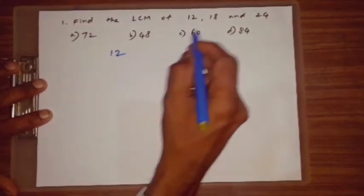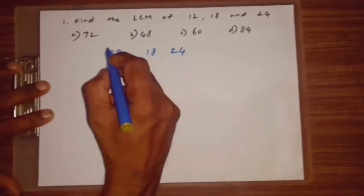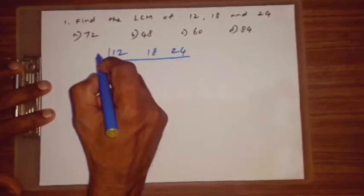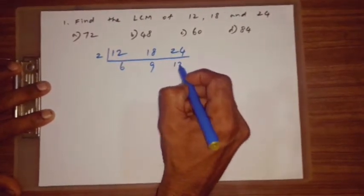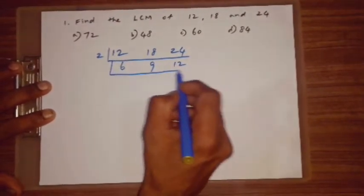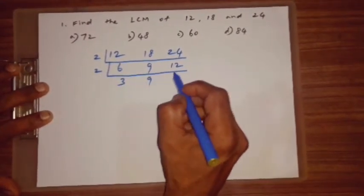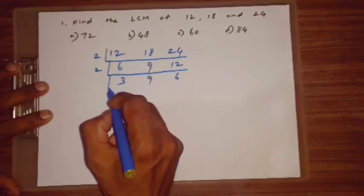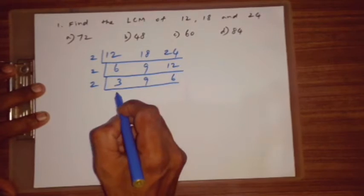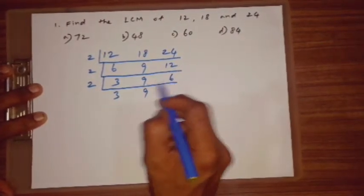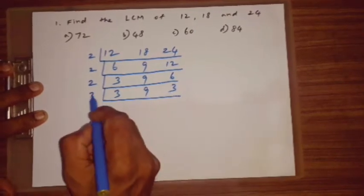So 12, 18, 24 — divide by 2 table: get 6, 9, 12. Again divide by 2: get 3, 9, 6. Again divide by 2: get 3, 9, 6. Then divide by 3 table.